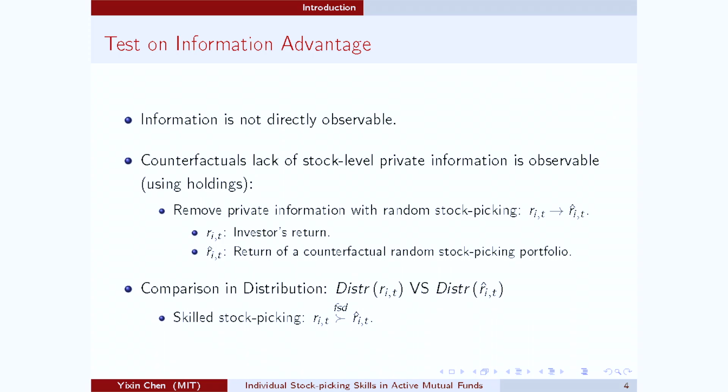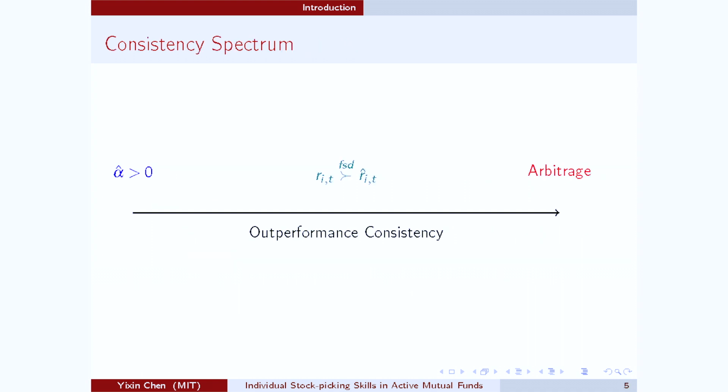I'm going to show you that the stock picking skills of an investor are going to result in his return distribution first-order stochastically dominating the return distribution of the counterfactual random portfolio that has no stock-level private information. And this first-order stochastic dominance is the condition that we are going to test. Essentially, the new first-order stochastic dominance condition imposes a strong requirement on the consistency of an investor's out-performance.